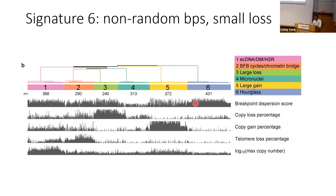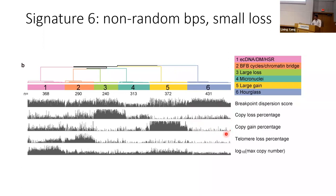The hourglass signature has multiple features: it has the highest breakpoint dispersion score, meaning breakpoints are highly localized, with a little copy loss but essentially no copy gain. In an example from prostate cancer, SV breakpoints are highly concentrated at very specific locations on the chromosome, with a very small amount of copy loss at each breakpoint.